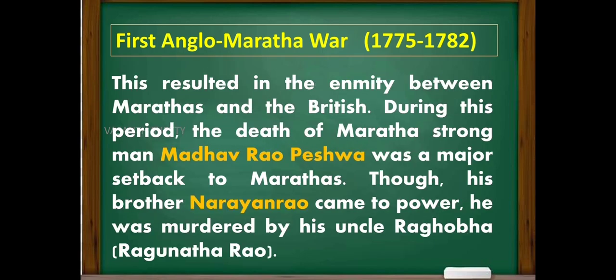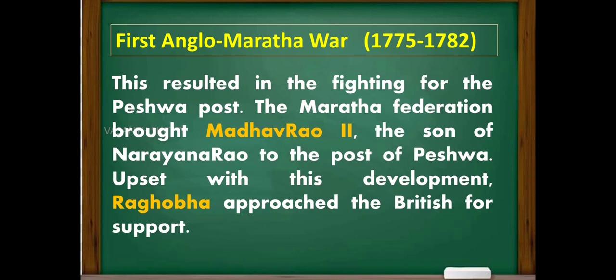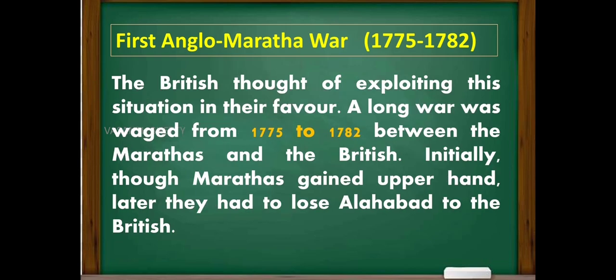This resulted in enmity between the Marathas and the British. During this period, the death of the Maratha strongman Madhavrao Peshwa was a major setback to the Marathas. Though his brother Narayanrao came to power, he was murdered by his uncle Raghoba (Raghunathrao). This resulted in a fight for the Peshwa post. The Maratha federation brought Madhavrao II, the son of Narayanrao, to the Peshwa post. Upset with this, Raghoba approached the British for support.